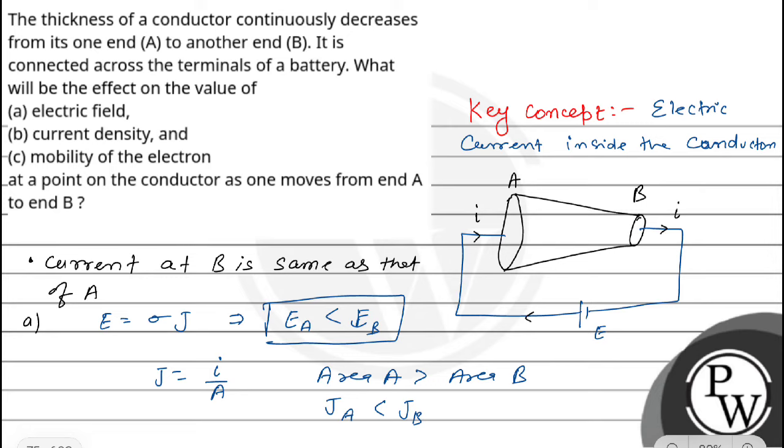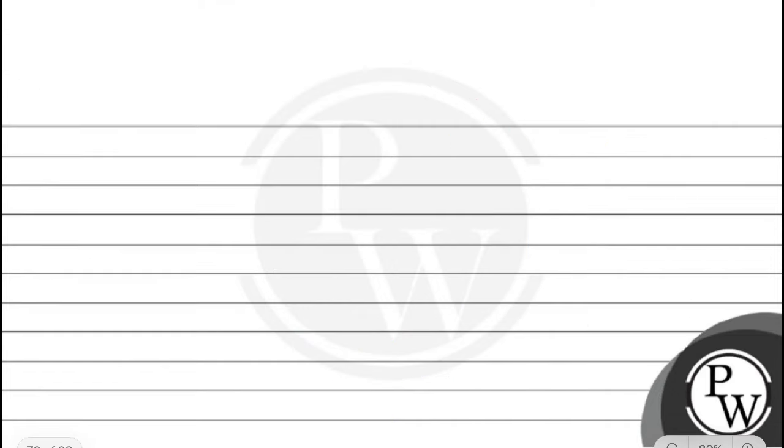Now B is current density, that is J. So now we can see J at B is greater than J at A.